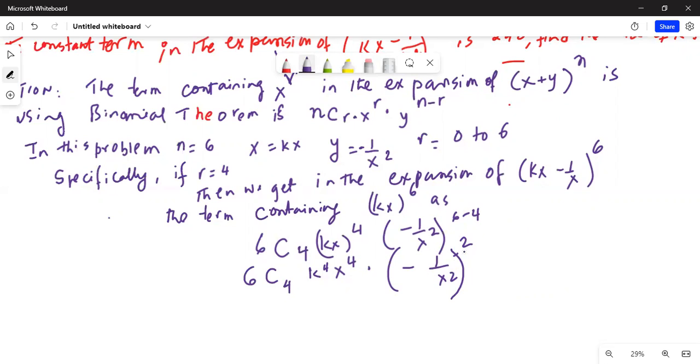Now -1/x² raised to the power of 2 - when a negative number is raised to an even number, it will be positive. So this will finally reduce to 6C4·k^4·x^4·1/x^4. We can cancel x^4 with x^4, so this is eventually 6C4·k^4.